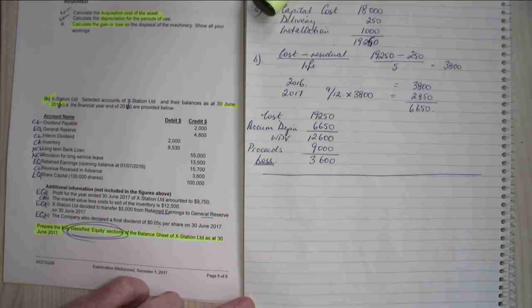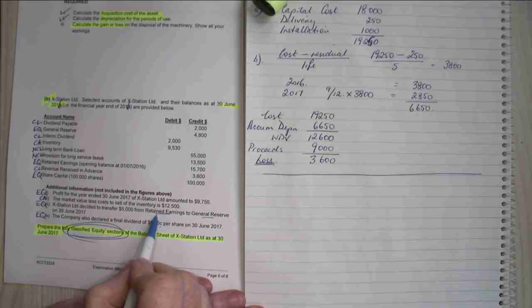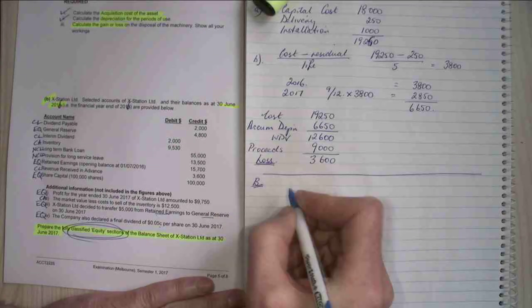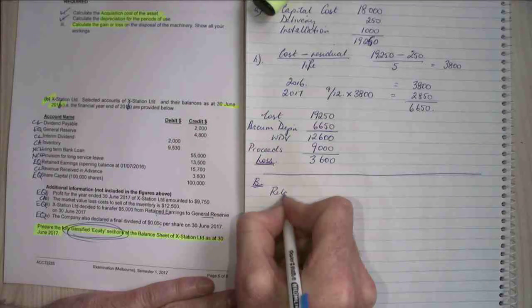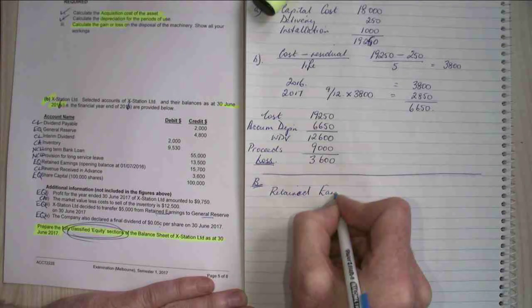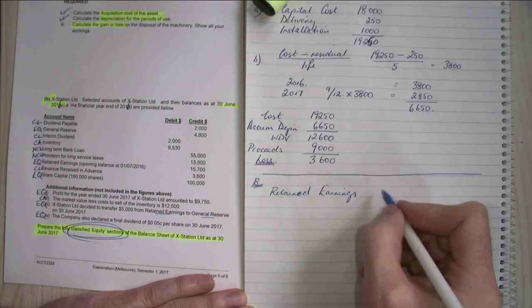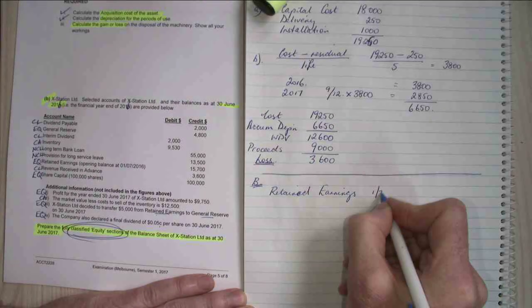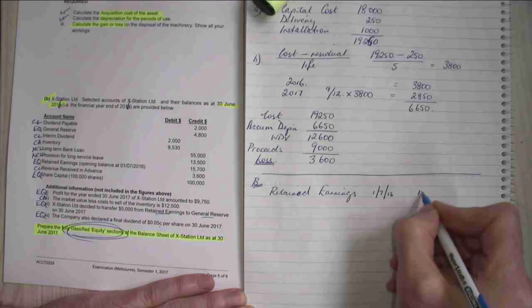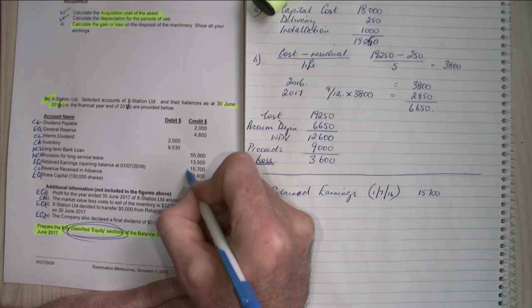Alright, so let's do this. First things first, I'm going to really have to work out, because there's a few things that have happened in my retained earnings. So I'm going to work out what my retained earnings are. My retained earnings now, at the 1st of the 7th, my retained earnings balance was $15,700. I'm going to tick that off.